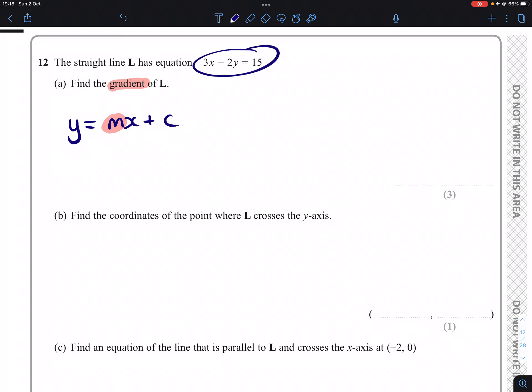So this equation, 3x - 2y = 15, the first thing I'm going to do is add 2y to both sides of it, so we end up with a positive y term. I'm then going to take away 15 from both sides, which will give us this.